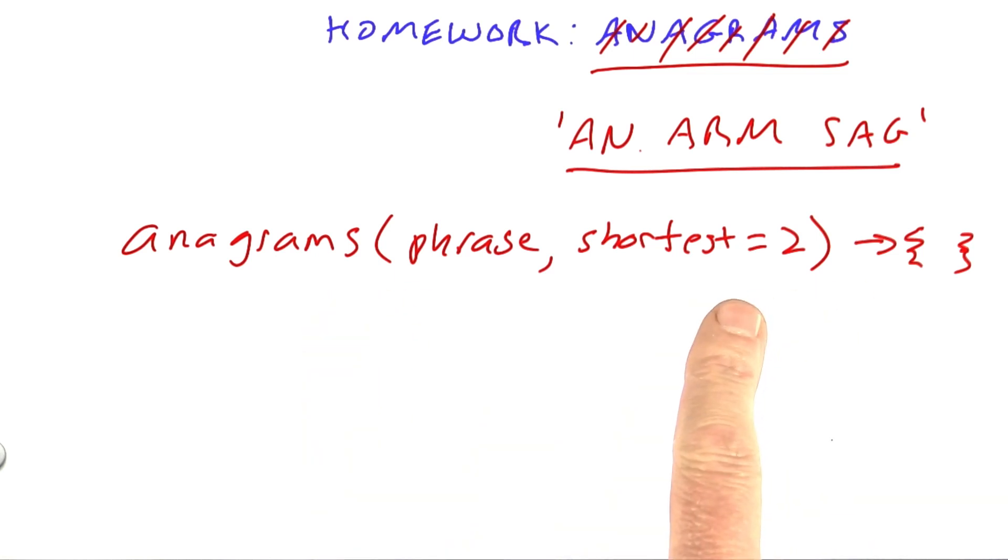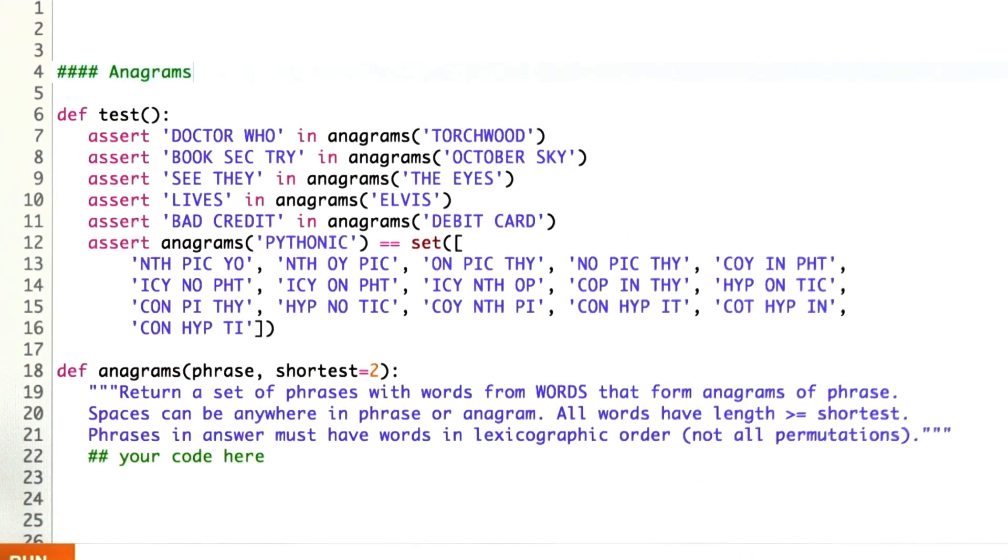I want you to generate that set. You can use things that we've had before, like the set of words and prefixes that we've already defined. You might find it useful to reuse functions such as find_words. Here's the skeleton of the function with its signature. It's going to return a set of words.